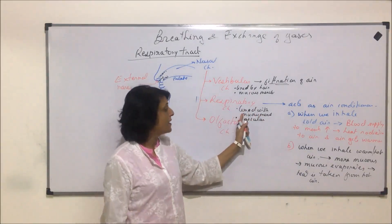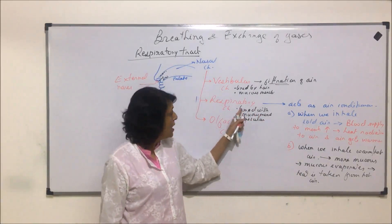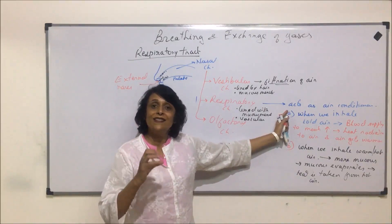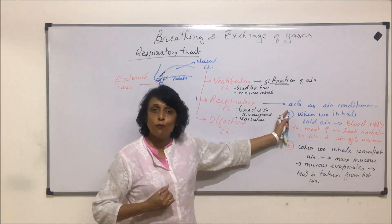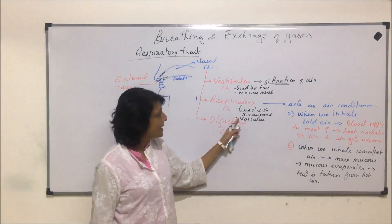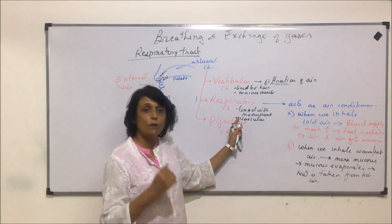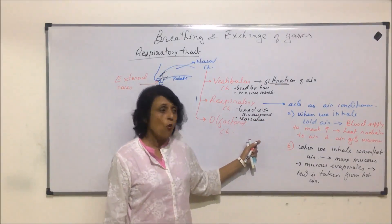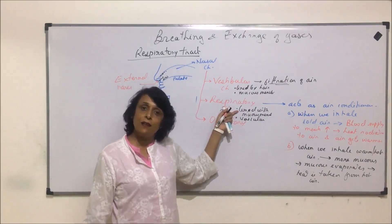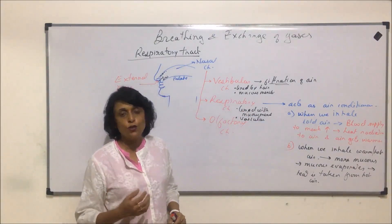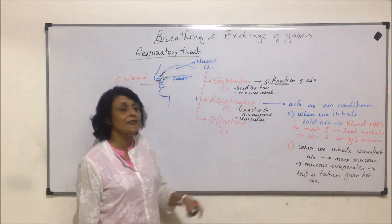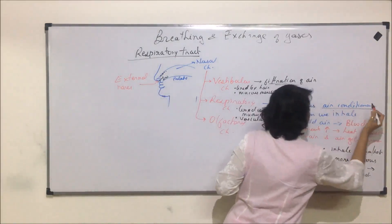The two properties — being lined with mucus membrane and being highly vascular — help this chamber regulate the temperature of air reaching the alveoli. If cold air comes in, the vascular nature increases blood supply, more heat radiates, and the air gets warm. If hot air is inhaled, the mucus membrane secretes more mucus, which evaporates, takes heat from the air, and cools it.